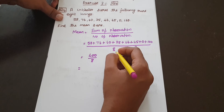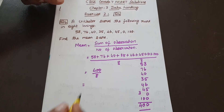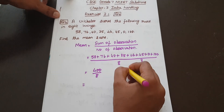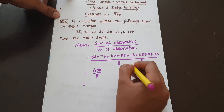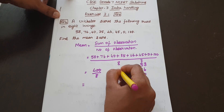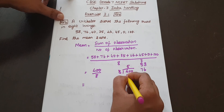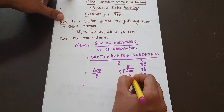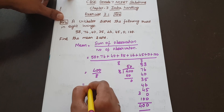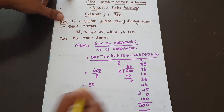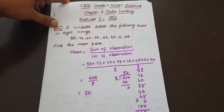400 divided by 8. Using the 8 times table: 5 times 8 is 40, so 50 times 8 is 400. Mean is equal to 50.